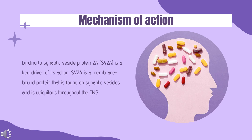Levodiracetam and related analogs show a relation between affinity for SV2A and antiepileptic potency, further suggesting that action at this site contributes to the antiepileptic activity of the drug. Levodiracetam has also been shown to indirectly affect GABAergic neurotransmission, despite having no direct effect on GABAergic or glutamate receptors, and to modulate ionic currents. Similarly, levodiracetam has been shown in vitro to inhibit N-type calcium channels. How, or even if, these actions are implicated in its antiepileptic action have yet to be elucidated.